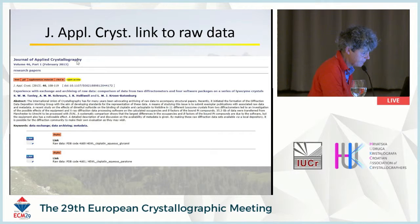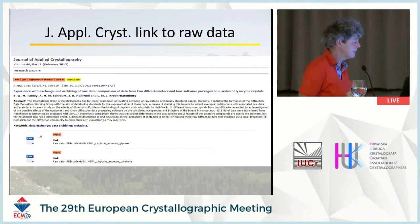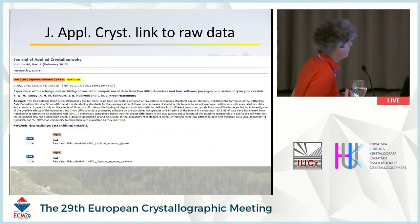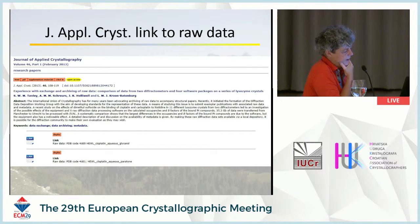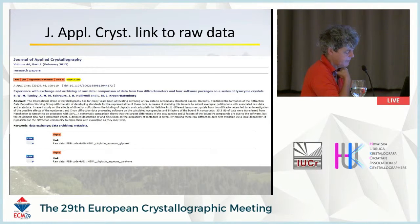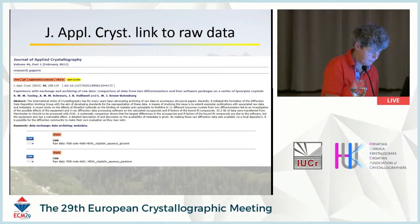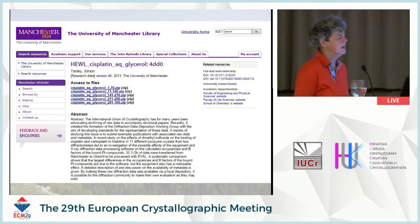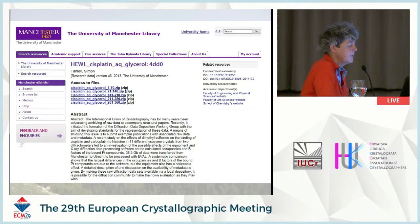We set up this raw data archive and we are, I think, the first to link a publication in the Journal of Applied Crystallography to raw data, with a link in the supplementary material to the raw data. These links now point to Manchester because after one and a half years they finally set up an archive system in the Manchester library.